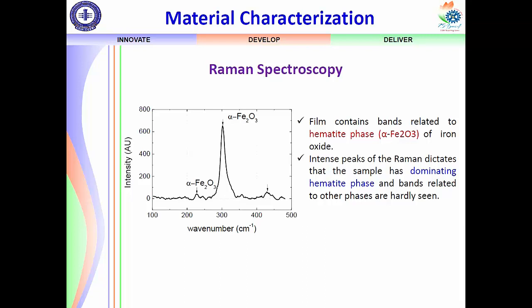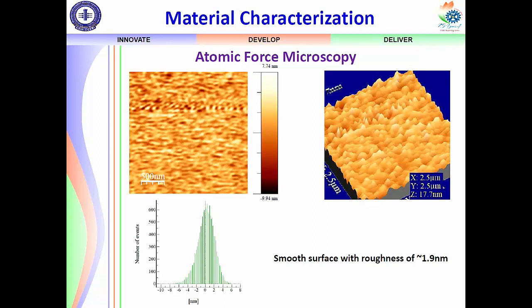Next is atomic force microscopy, which gives the roughness of the deposited film. Roughness is an important parameter for sensing: higher roughness gives more surface-to-volume ratio, meaning more reaction sites and higher sensitivity. However, this is a trade-off — higher roughness can also mean instability. The roughness should be high enough for sensitivity but not so high that it produces unstable results; a smooth film is needed for stable results.